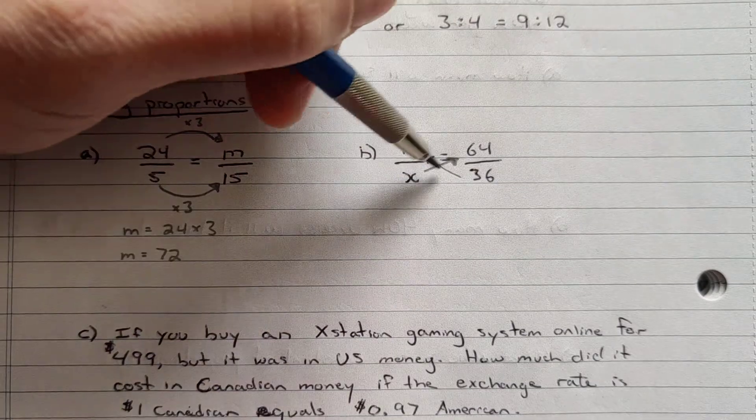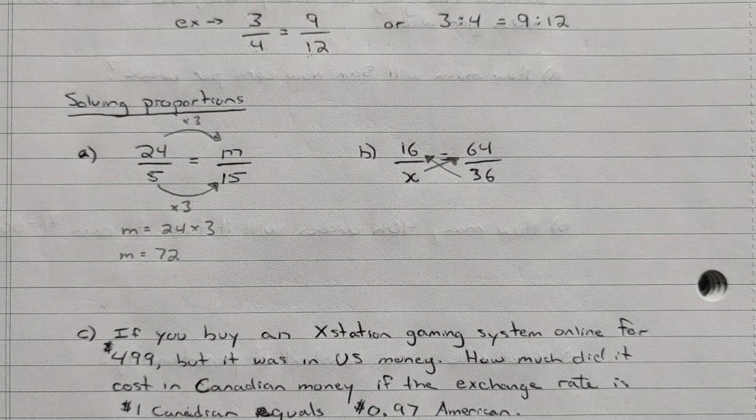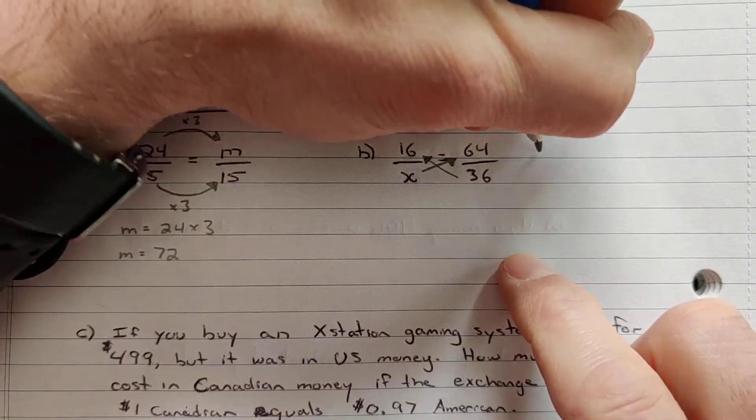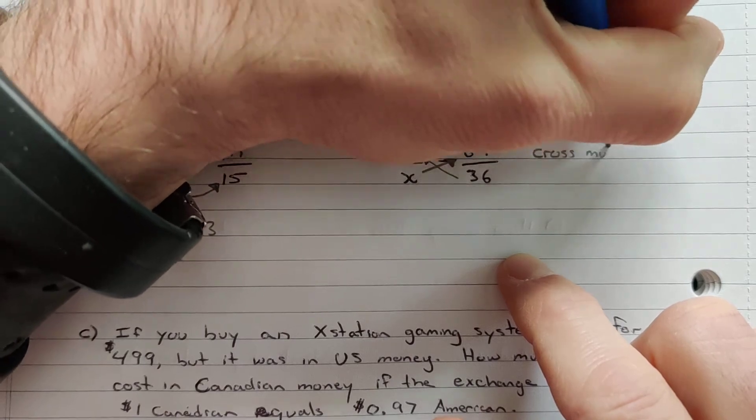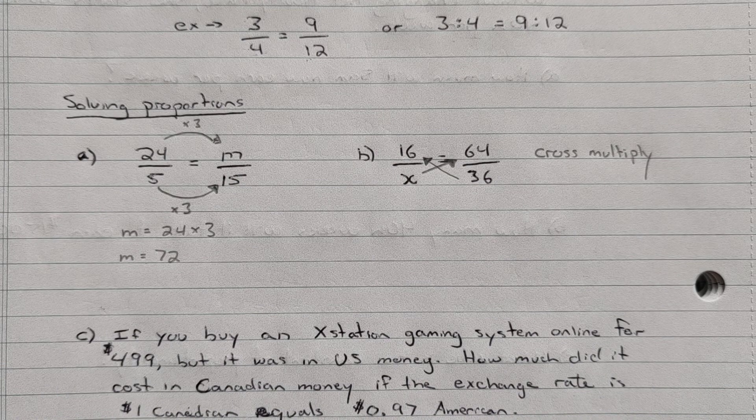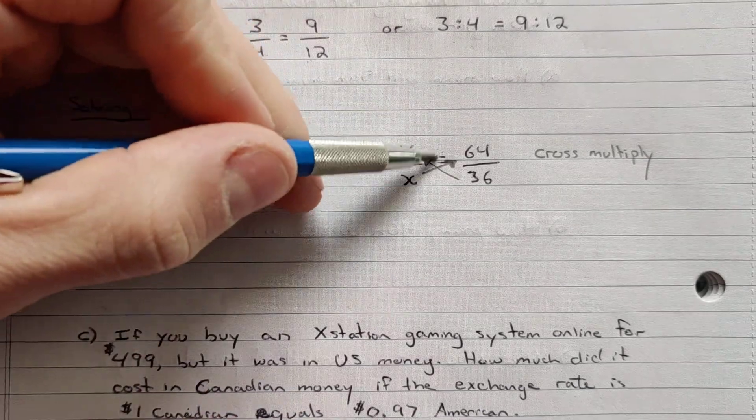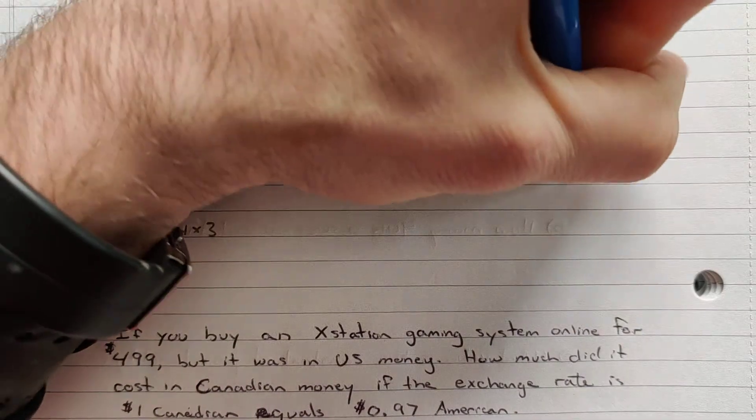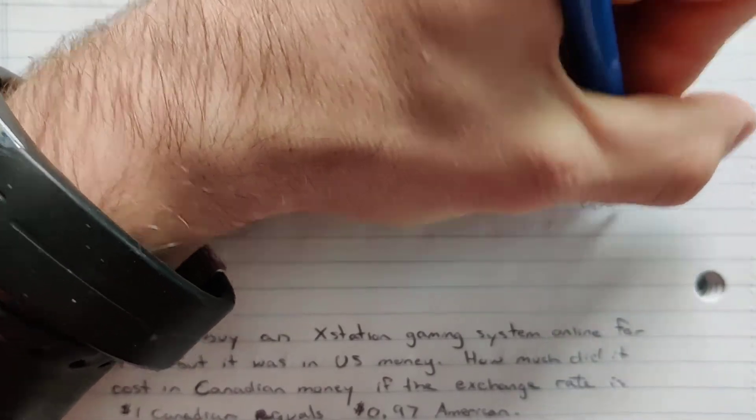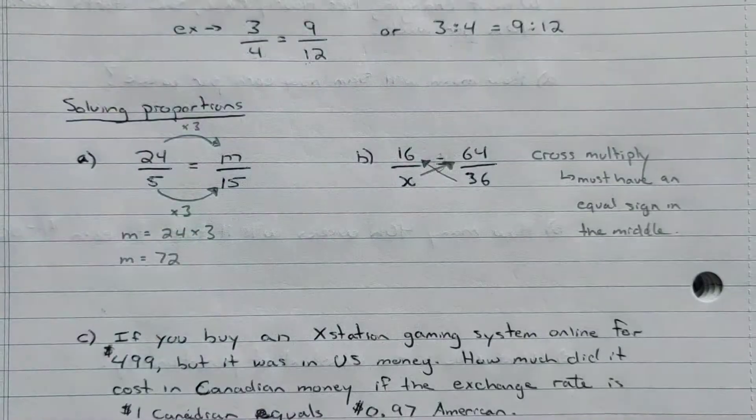So we're going to cross multiply. And so that just reminds me that I'm multiplying. I'm going to multiply x by 64 and 36 by 16. This is going to get rid of the fractions and leave us with an equation that we can solve. So this is called cross multiply. So if you're asked to cross multiply that's what you're doing. You're taking the bottom of one fraction and multiplying it by the top of the other. But it only happens in a proportion when there is an equal sign. So it must have an equal sign in the middle.